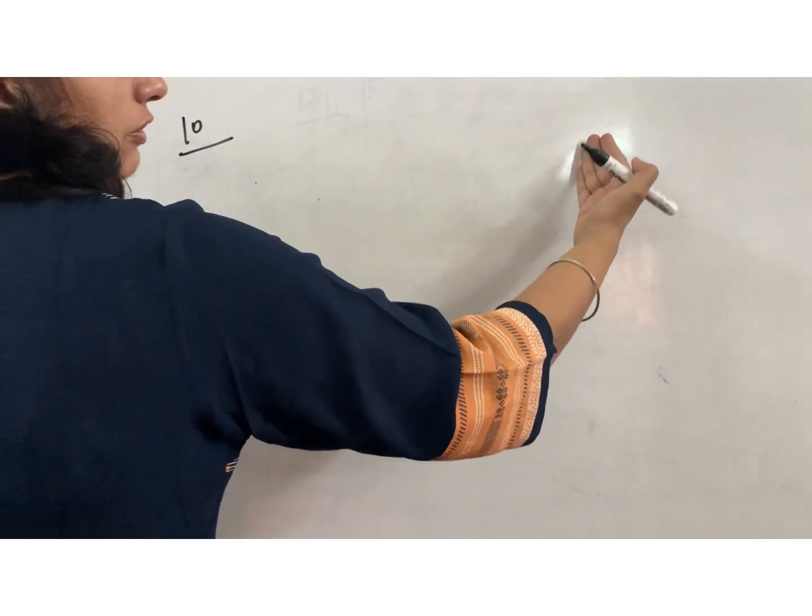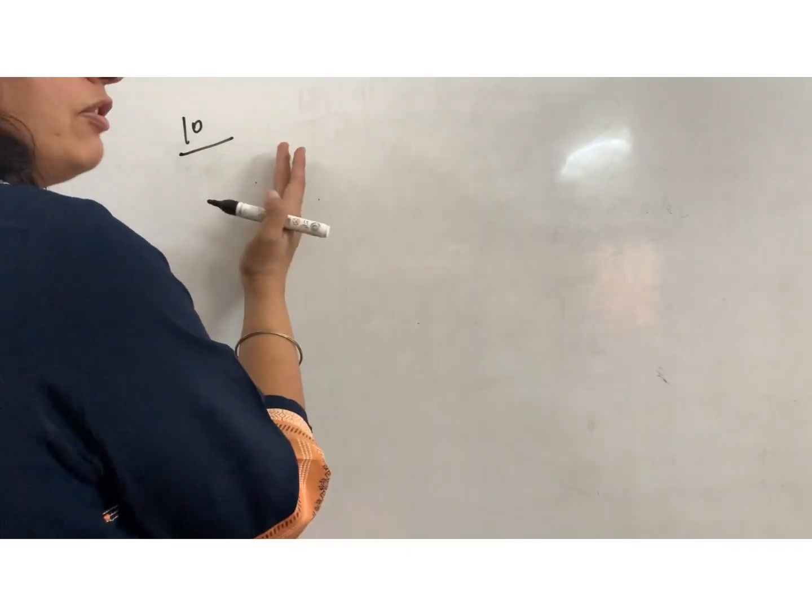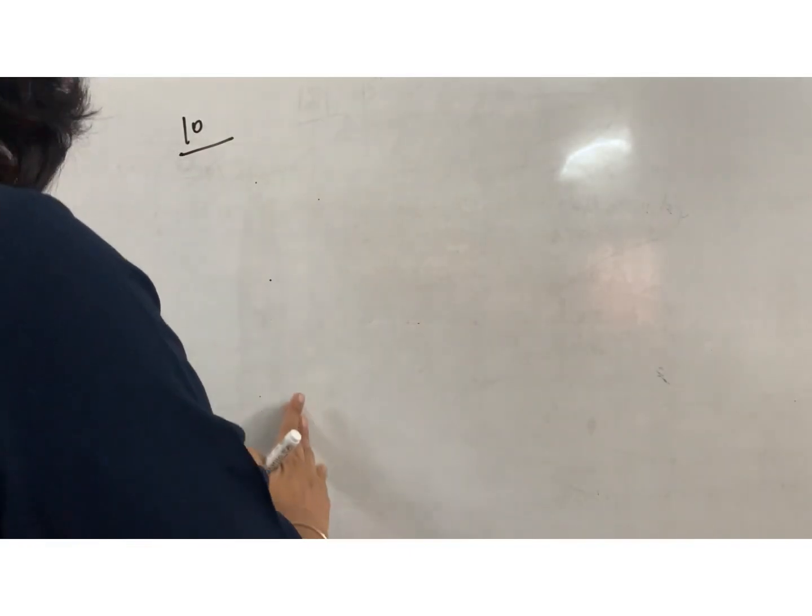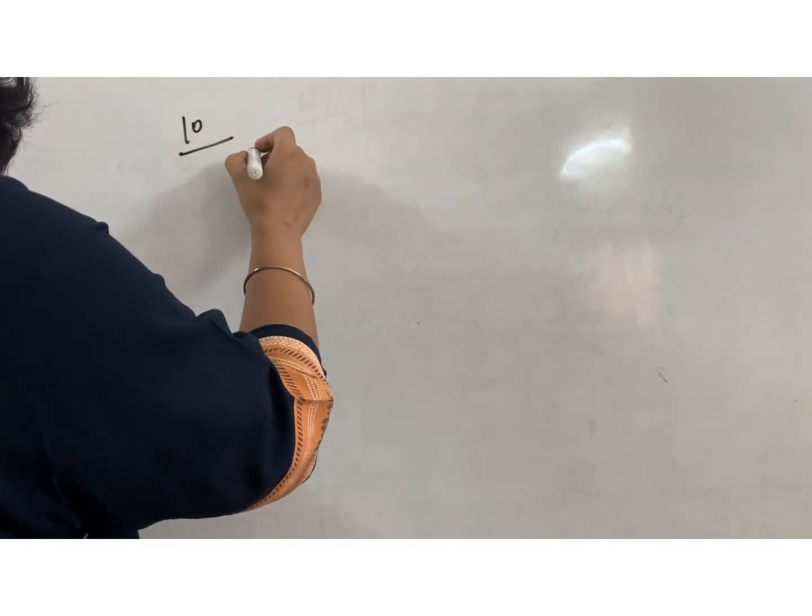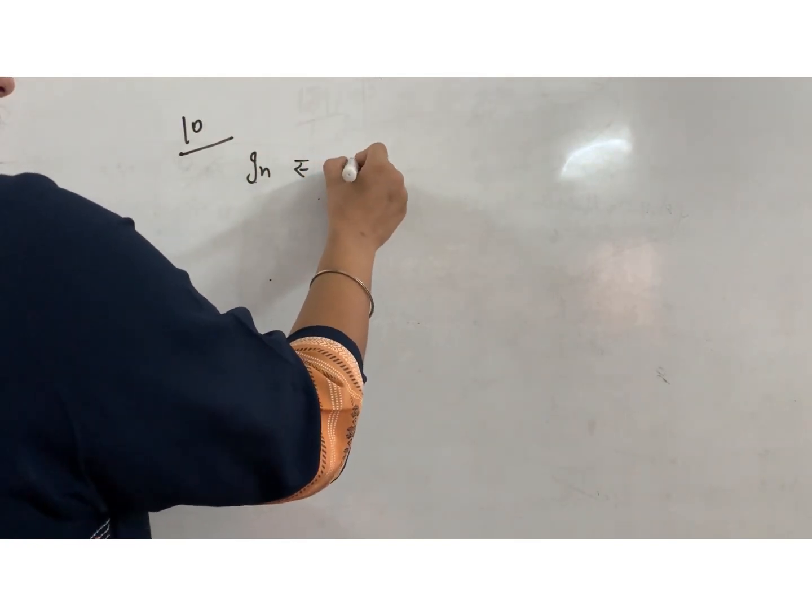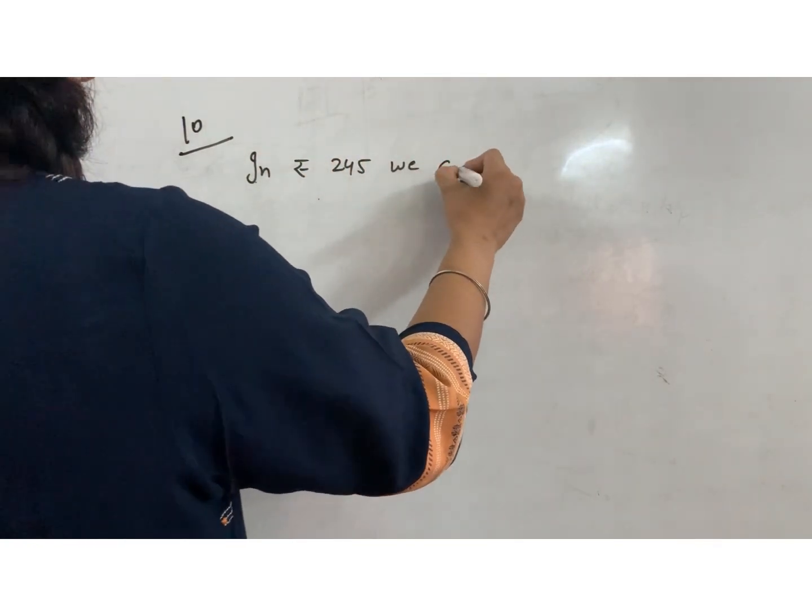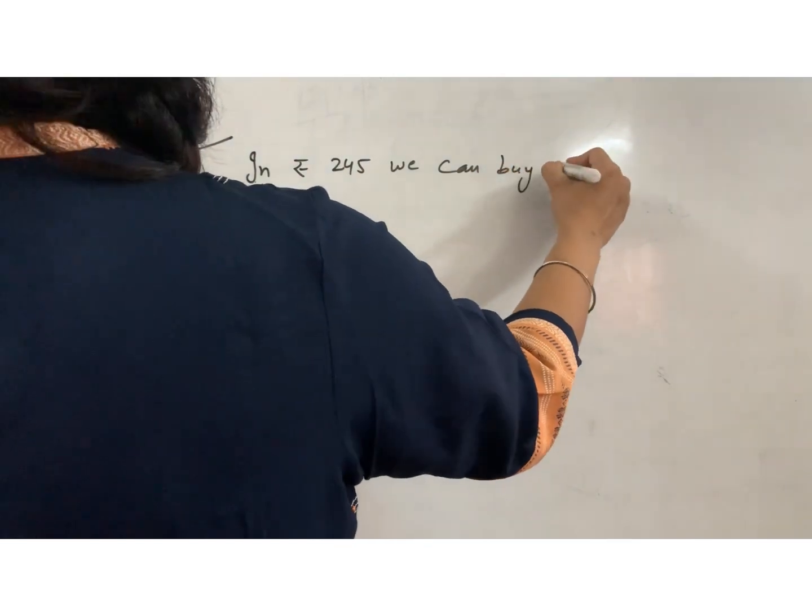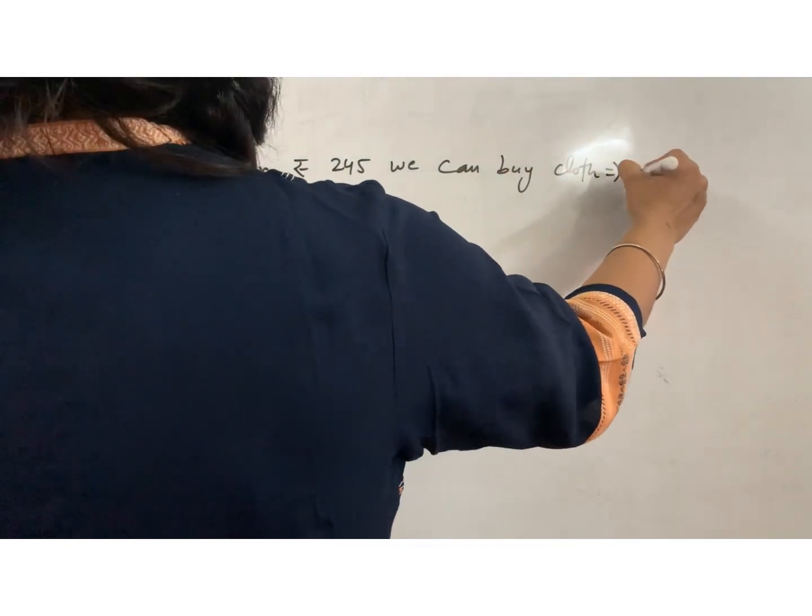Here we will take the length and here we will take the rupees. So what will be the equation? In Rs. 245 we can buy cloth is equal to 7 meter.